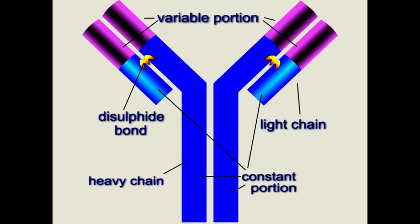Antibodies have two regions: the constant region, which binds to phagocytic cells like macrophages and activates the complement; and the variable region, which binds to antigens. Antibodies have two heavy chains and two light chains. All B cells in the body have a different variable region — like thousands of different barcodes trying to recognize which antigen matches them, covering all possible combinations of proteins and amino acids.